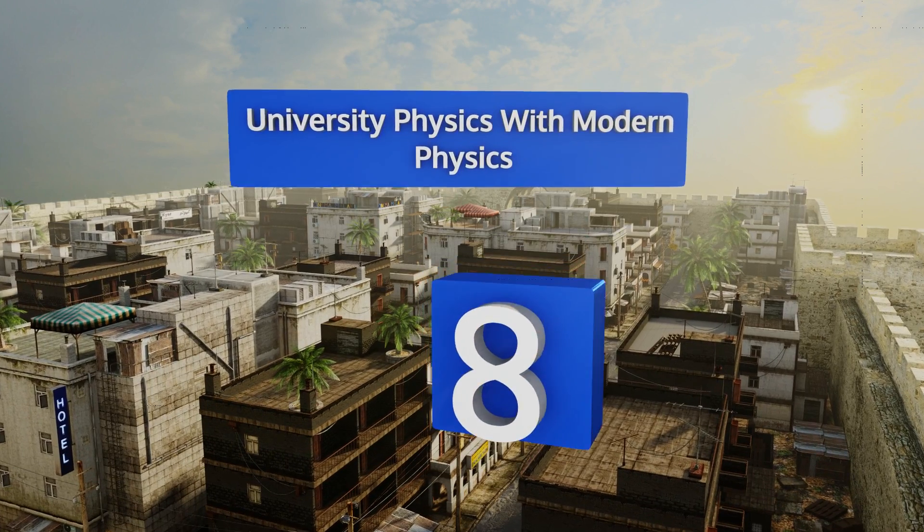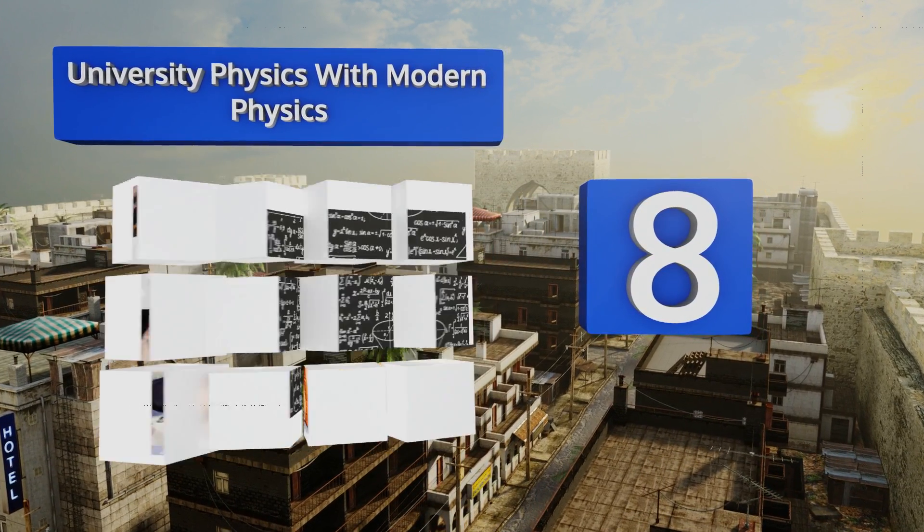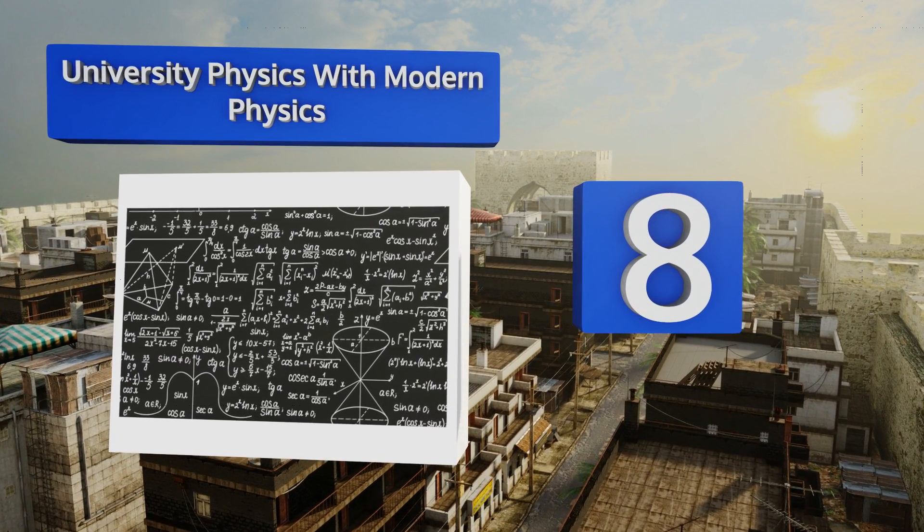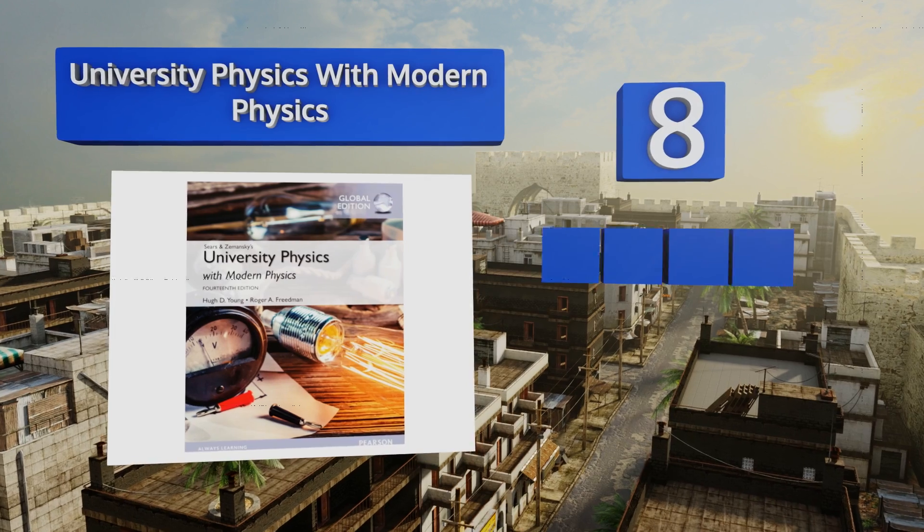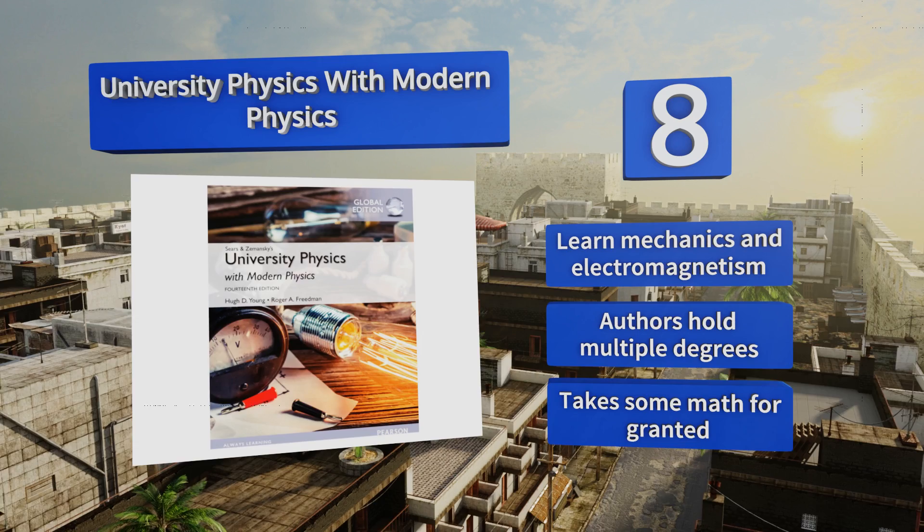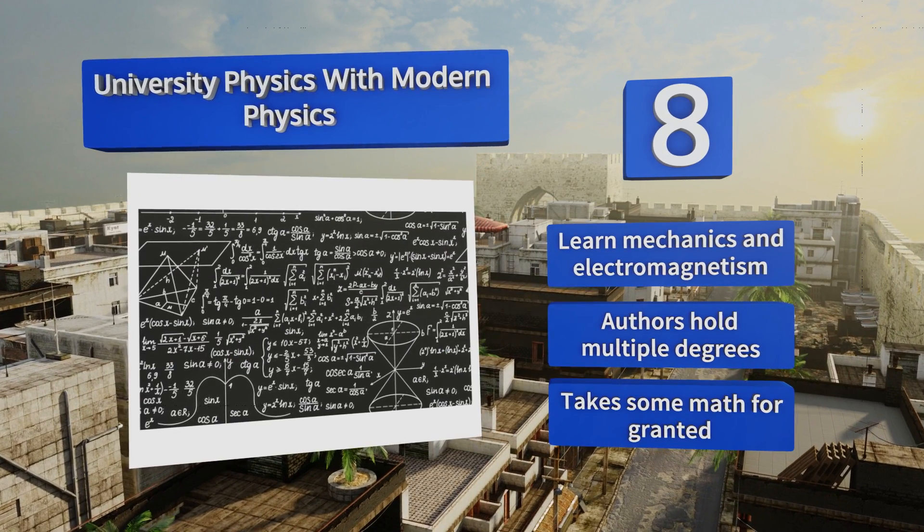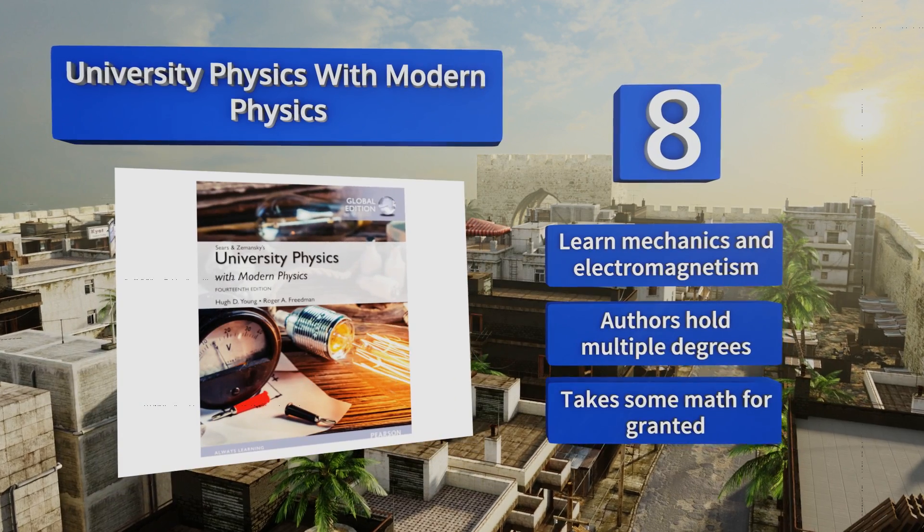Starting off our list at number eight, University Physics with Modern Physics by Hugh Young and Roger Friedman is currently on its 14th global edition, so clearly there's much merit to this volume. It is expensive but intended only for the student actively pursuing advanced studies in the field. It teaches mechanics and electromagnetism, and the authors hold multiple degrees.